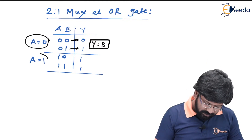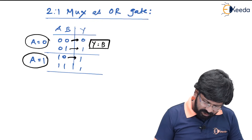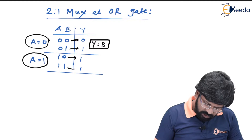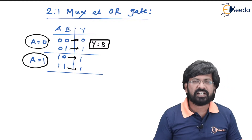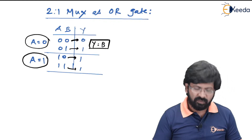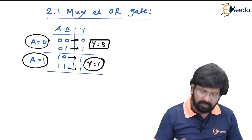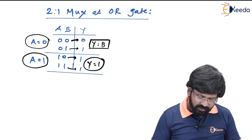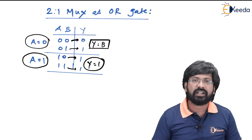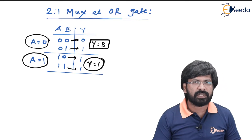Similarly, when A is equal to 1: when B is equal to 0, Y is 1, and when B is equal to 1, Y is still 1, meaning that Y is independent of B — Y is permanently 1. Since we know this nature of OR gate, let us try to implement it with the help of 2-to-1 multiplexer.